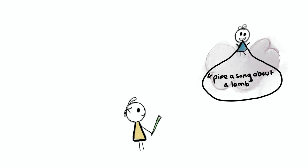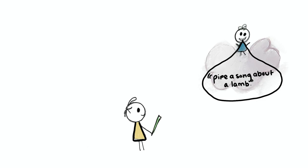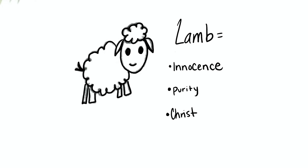The child says 'pipe a song about a lamb.' The lamb in this context can mean innocence, purity, or it can be a symbol of Christ. Some say that it is lowercase here because the child does not yet know that the lamb is a symbol of Christ.